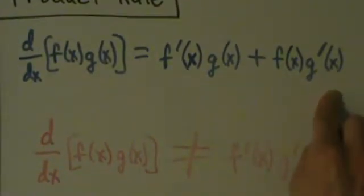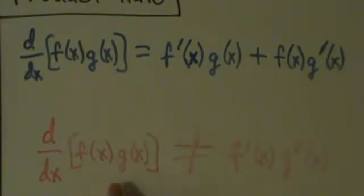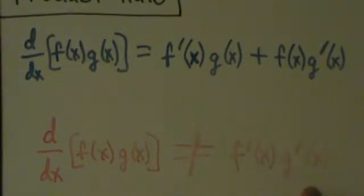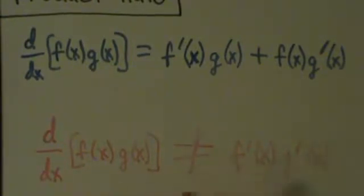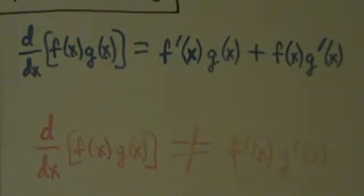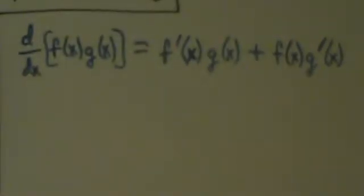We've got to be very careful because the derivative of f times g is not the same thing as f prime times g prime. So if you want to take the derivative of two things being multiplied, don't multiply their derivatives — that's not going to work out. We'll point that out in the examples in the next few videos. But for now let's just go ahead and prove the product rule.